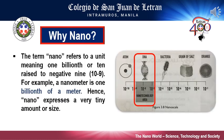Just how small is nano? In the international system of units, the prefix nano means 1 billion or 10 raised to negative 9. Therefore, 1 nanometer is 1 billionth of a meter. It's difficult to imagine just how small that is. So here are some examples. A sheet of paper is about 100,000 nanometers thick. A strand of human DNA is 2.5 nanometers in diameter. There are 25,400,000 nanometers in one inch.